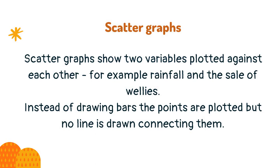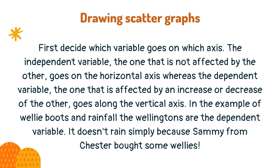Scatter graphs show two variables plotted against each other, for example rainfall and the sale of wellies. Instead of drawing bars, the points are plotted but no line is drawn connecting them. First decide which variable goes on which axis. The independent variable — the one that is not affected by the other — goes on the horizontal axis, whereas the dependent variable — the one that is affected by an increase or decrease of the other — goes along the vertical axis.